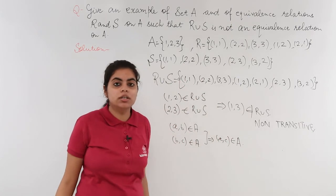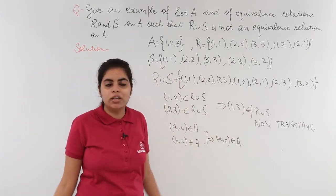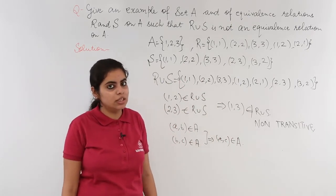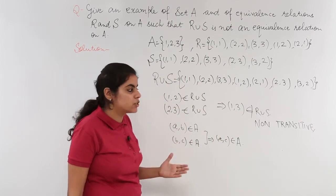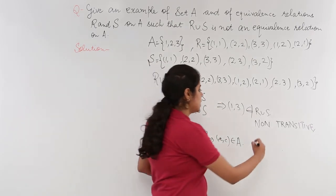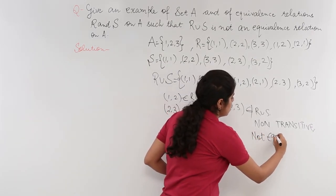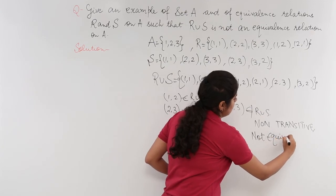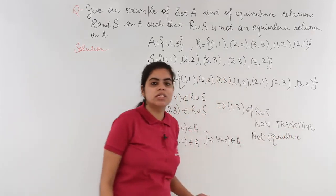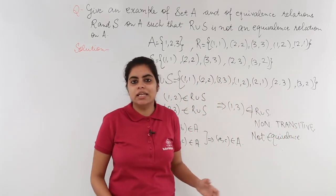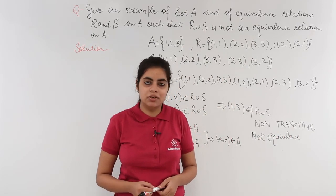Since R union S is not a transitive relation, it is not an equivalence relation. This was the second sample problem on equivalence relation.